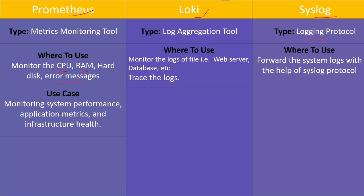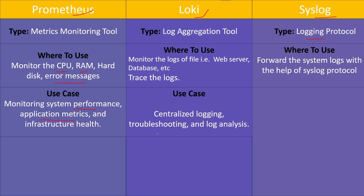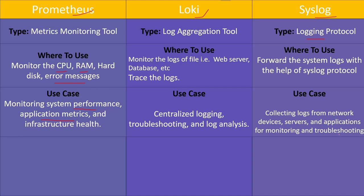Application metrics means we have an application running with configured metrics — for example, counting the total number of HTTP return codes such as 500, 402, 300, or 200. For Loki, use cases include centralized logging, troubleshooting, and log analysis. For syslog, it collects logs from network devices, servers, and applications. Many configure syslog IP addresses on switches and routers so logs are forwarded to the syslog server using the syslog protocol.